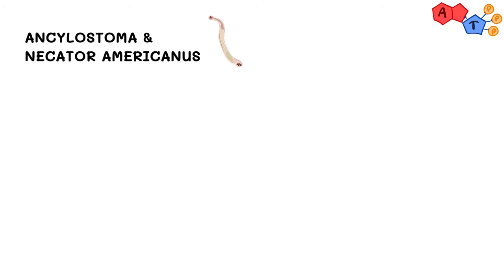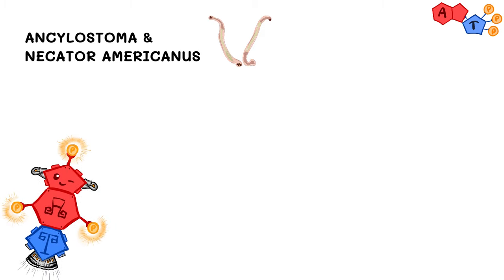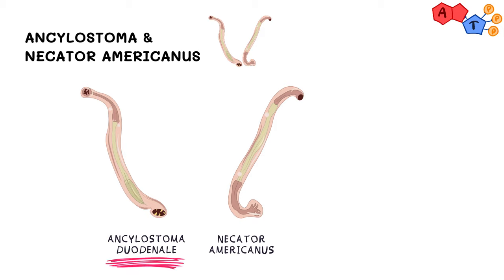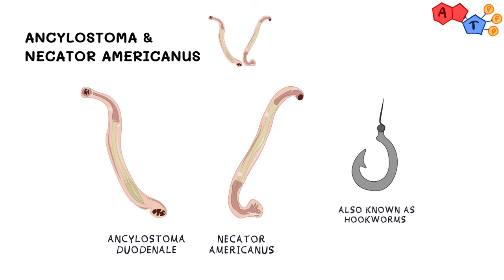The third group is Ankylostoma species and Necator americanus. These two are grouped together because they share many similarities. Ankylostoma includes many species, but Ankylostoma duodenale is the one commonly associated with human infections. These two are also known as hookworms — and if you look at their structure, you'll know why: their heads are bent in a way that forms a hook-like structure.